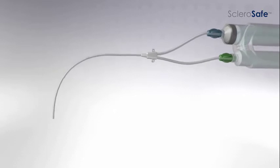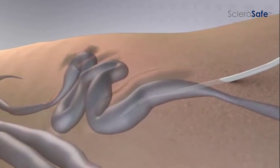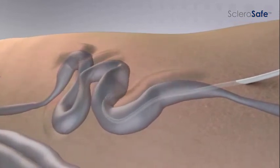The SclerosAfe double lumen catheter is then advanced over the wire to the end of the treated vein. Its proper position is confirmed with ultrasound.